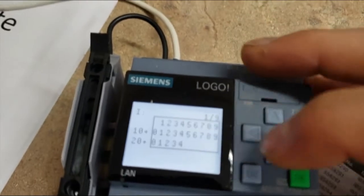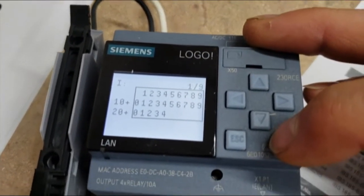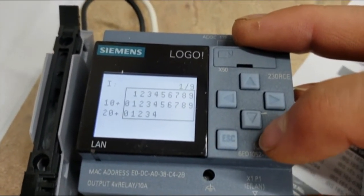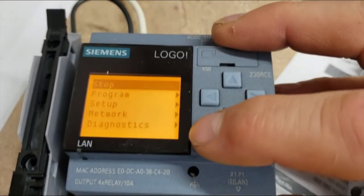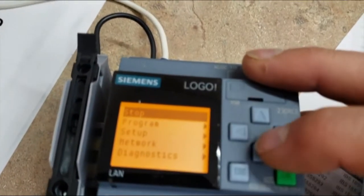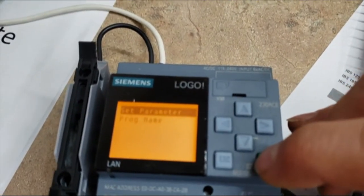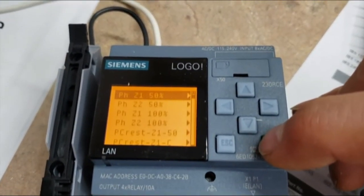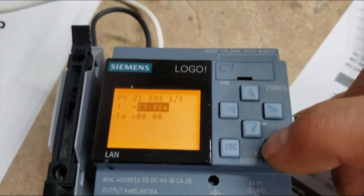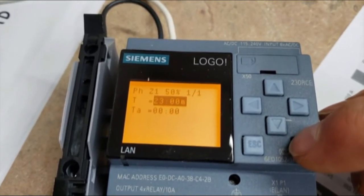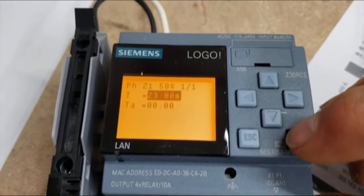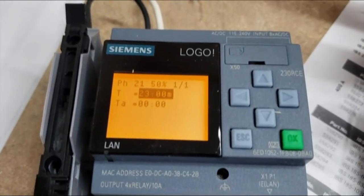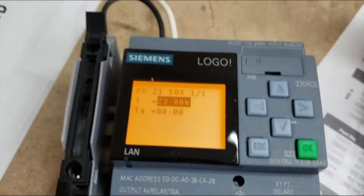And so then, to verify that it's taken if you want, you can simply go to the program, set parameter, and you can check one of them to verify that the new time has been entered and is in the new PLC.